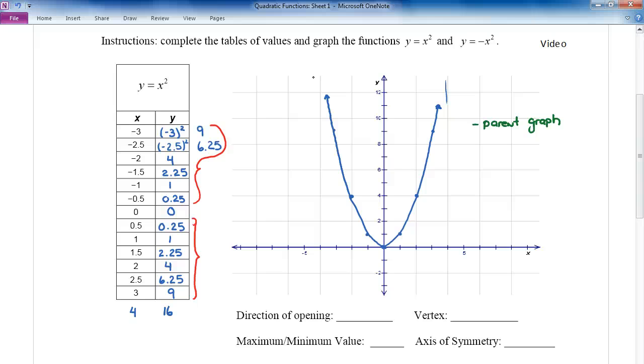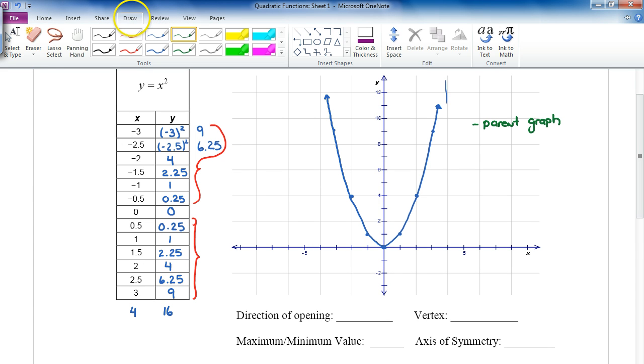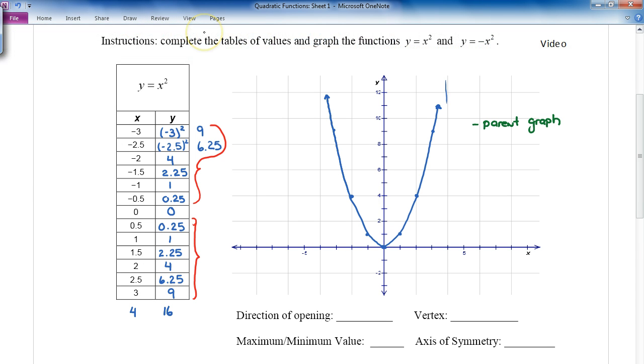And transformations is all about applying some change to your original parent graph to get some new, what we could call a child graph, the resulting graph. And even though we're working with quadratics right now, eventually the same principles will apply to different types of graphs.